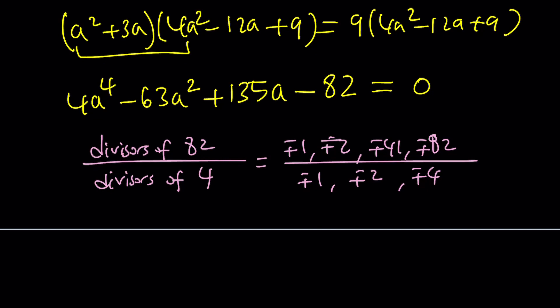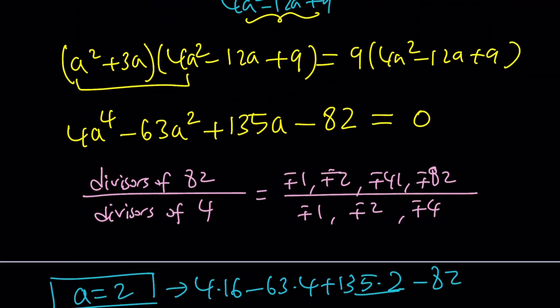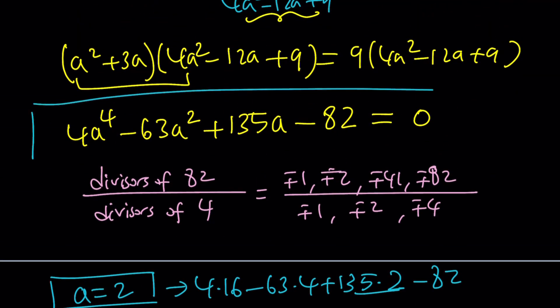I've done the testing. So I found that A equals 2 is a solution. Let me show you how. 4 times 16 minus 63 times 4 plus 135 times 2 minus 82. Now this is 64 plus 270. And this is minus 252 minus 82. Or 334 minus 334. And that's 0. Great. So A equals 2 is a solution of this quartic equation.